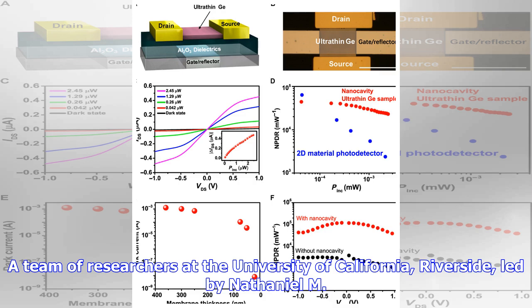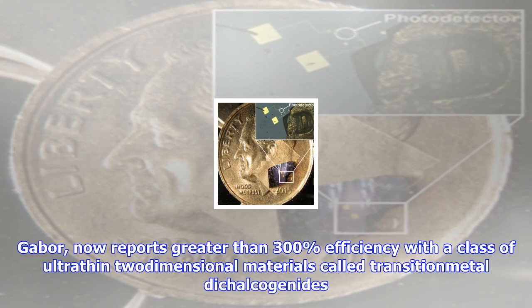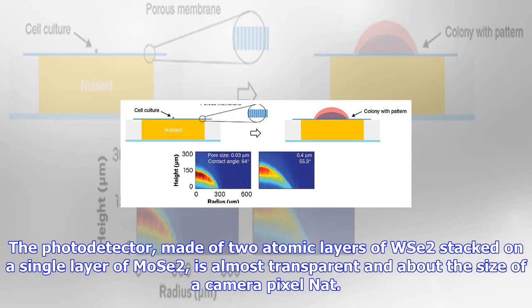A team of researchers at the University of California, Riverside, led by Nathaniel M. Gabor, now reports greater than 300% efficiency with a class of ultra-thin two-dimensional materials called transition metal dichalcogenides.